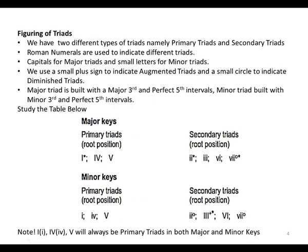Figuring of triads. We must know how to figure out triads so we can communicate effectively in analysis. Roman numerals are used to indicate different triads: capitals for major triads, small letters for minor triads, a plus sign (+) to indicate augmented triads, and a small circle or degree sign (°) to indicate diminished triads.